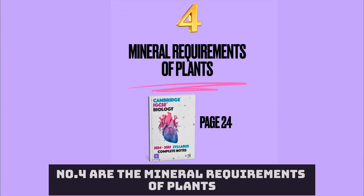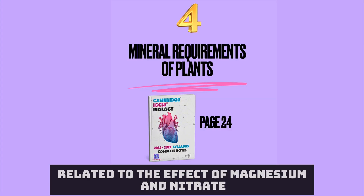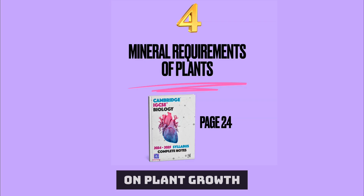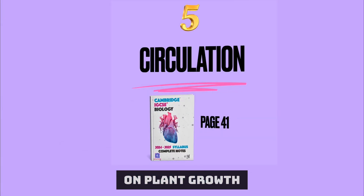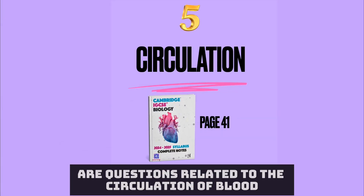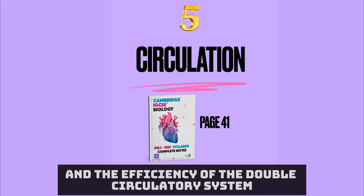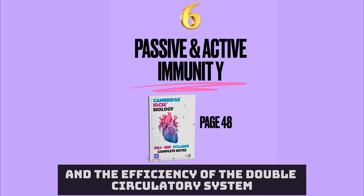Number four are the mineral requirements of plants, including questions related to the effect of magnesium and nitrate on plant growth. Number five are questions related to the circulation of blood and the efficiency of the double circulatory system.